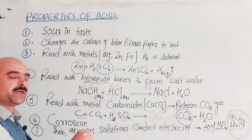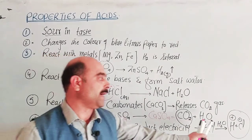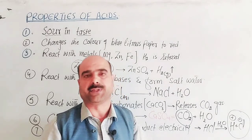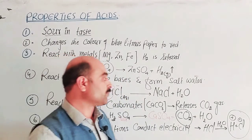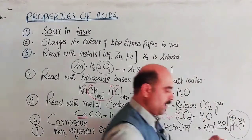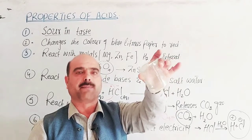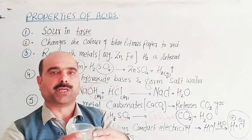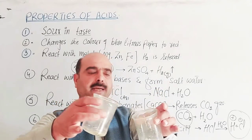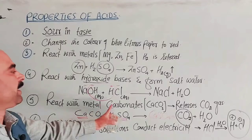All these properties of acids are due to the hydrogen ions which they provide in their aqueous solutions. For example, carbon dioxide is released with metal carbonates — the first test uses HCl — and these are all characteristic behaviors of acids.